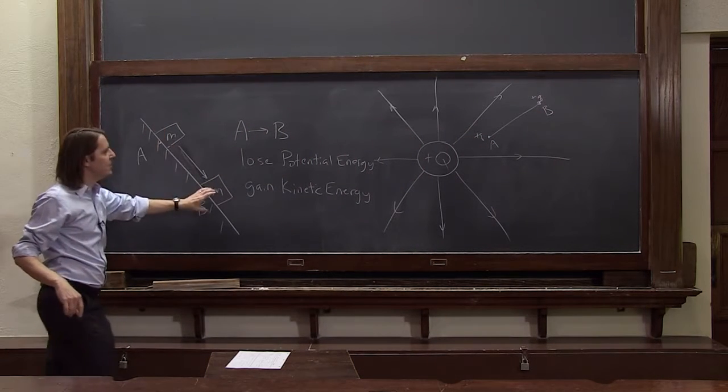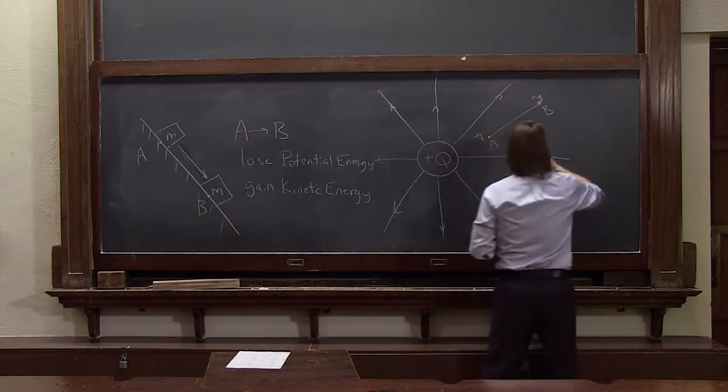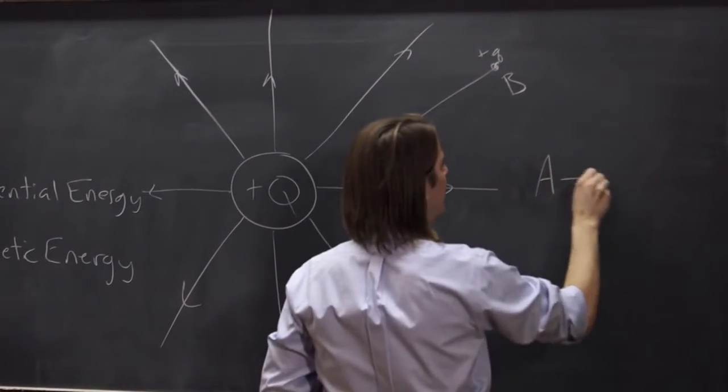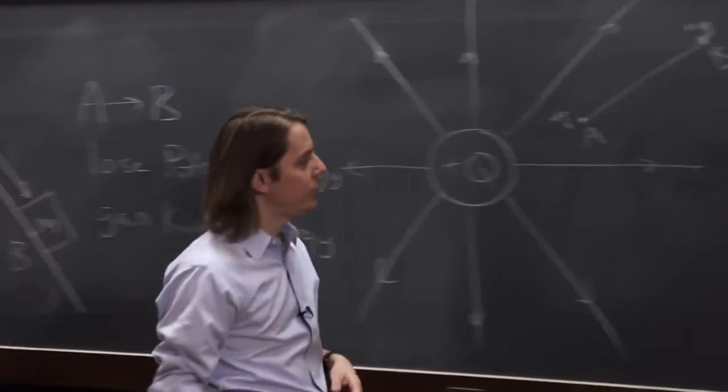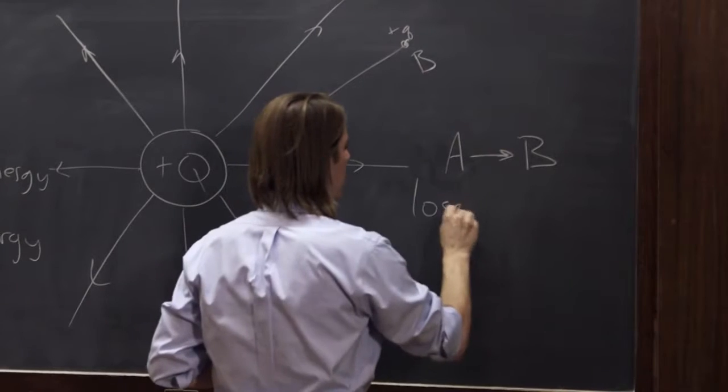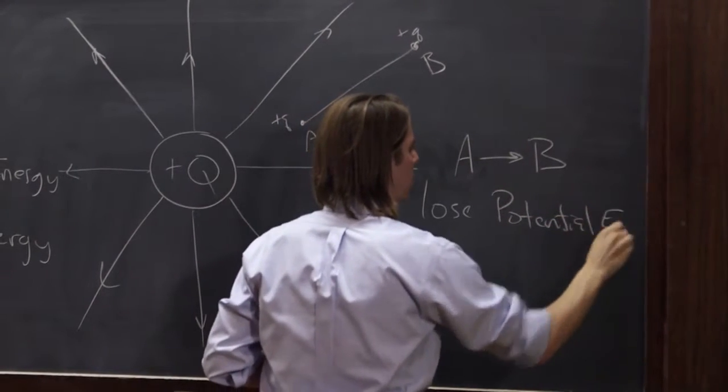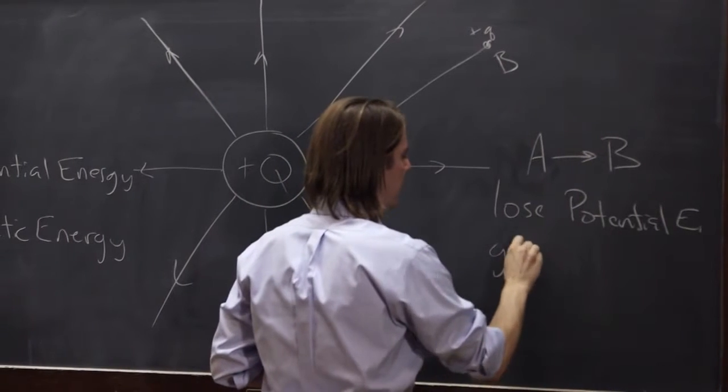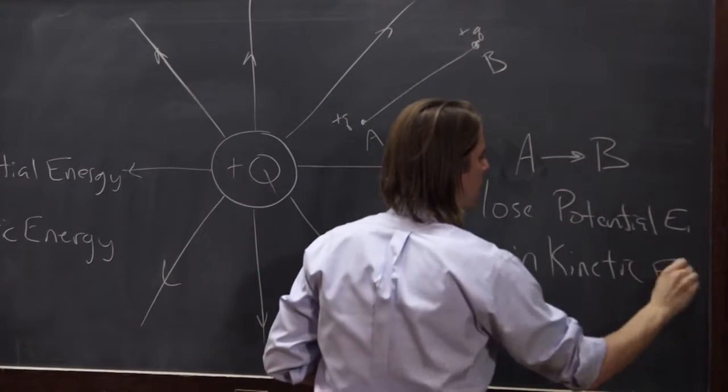If we let this go, it'll go from A to B. If we let this go, it'll go from A to B. So in this case, when we go from A to B, it's the same thing. You're going to lose potential energy and you're going to gain kinetic energy.